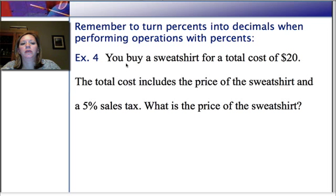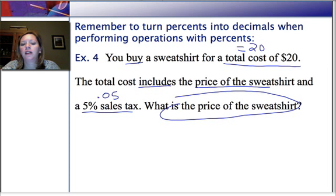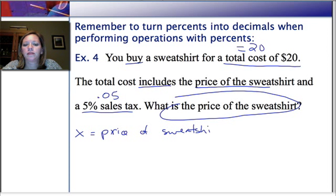So, let's go in here. We're going to buy a sweatshirt. That's probably important. The total cost of $20, that's telling me something equals 20. The total cost includes the price of the sweatshirt and a 5% sales tax. So, I'm going to go in my annotations and write that as 0.05. And we're trying to figure out what is the price of the sweatshirt. So, when I define my variable, I'm going to let x equal that thing that we want to know, the price of the sweatshirt. And now, let's go back and put this back in here. The total cost includes the price of the sweatshirt. So, that was x.